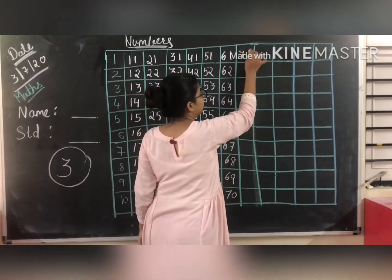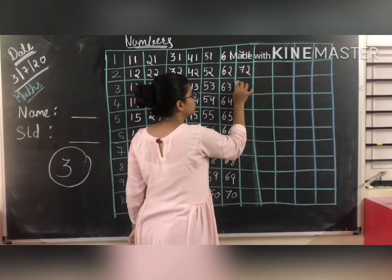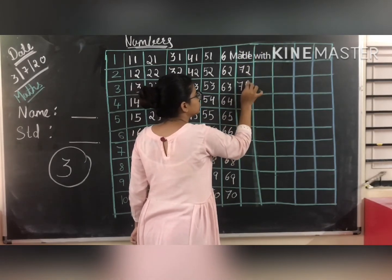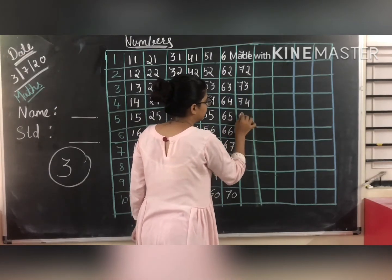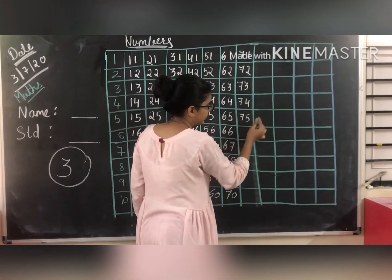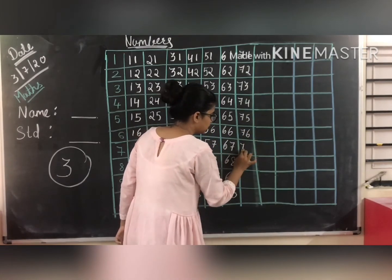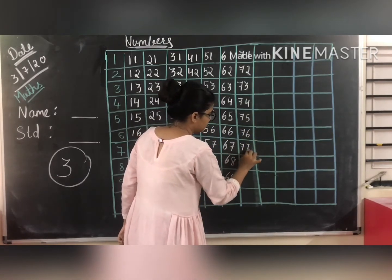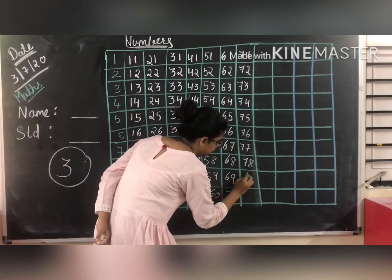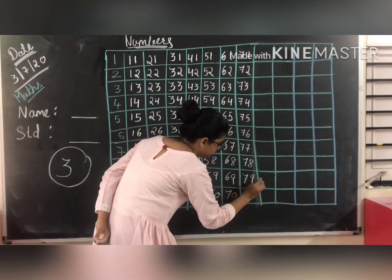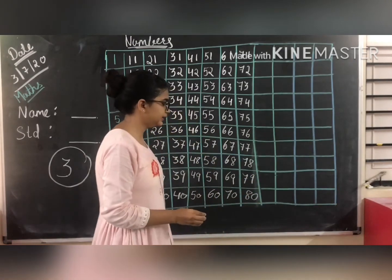After they come: 71, 72, 73, 74, 75, 76, 77, 78, 79, and 80.